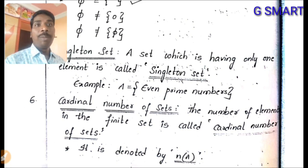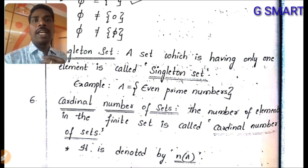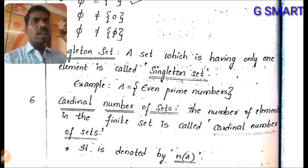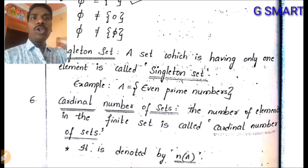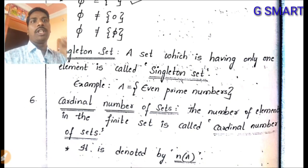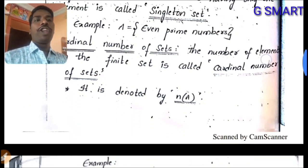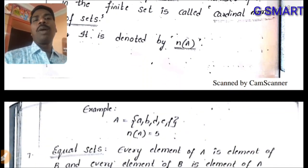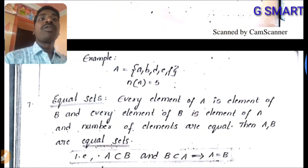Cardinal number of a set: the number of elements in a finite set is called the cardinal number of the set. It is denoted by n(A). For example, if A = {a, b, c, d, e, f}, then n(A) = 6.